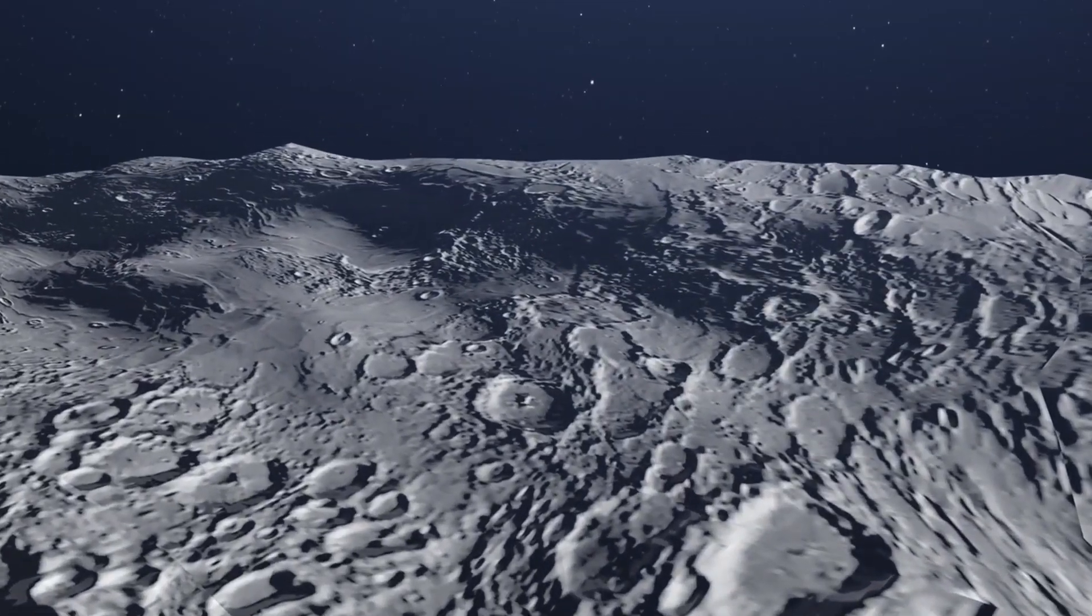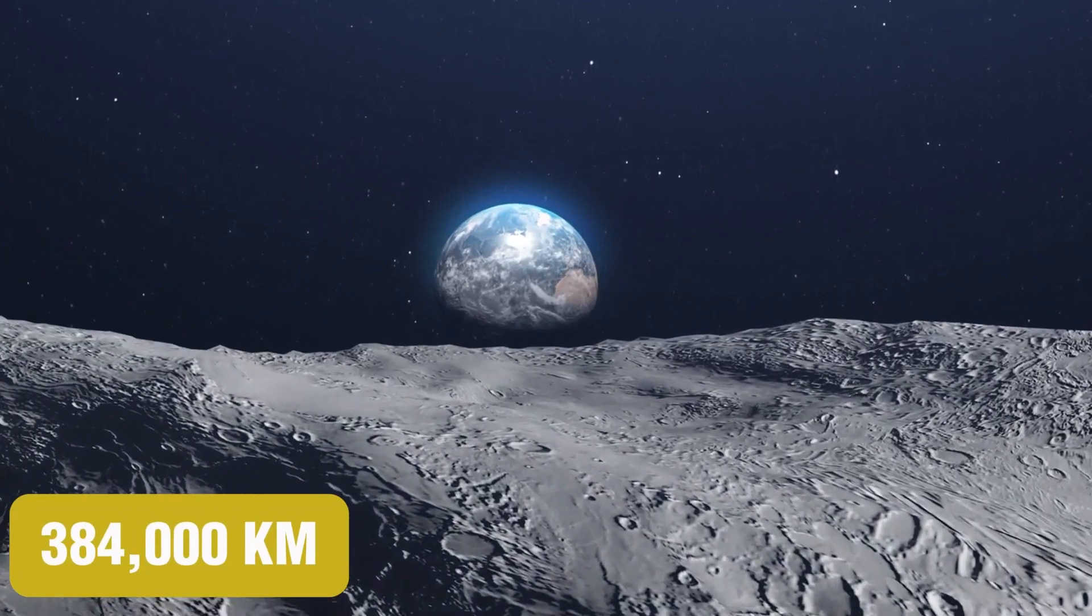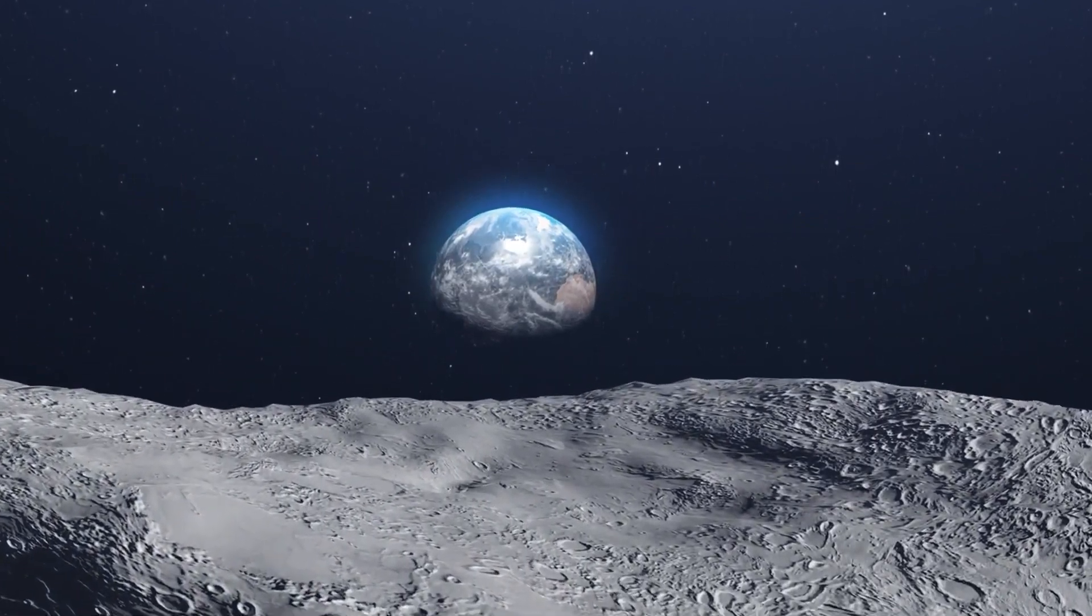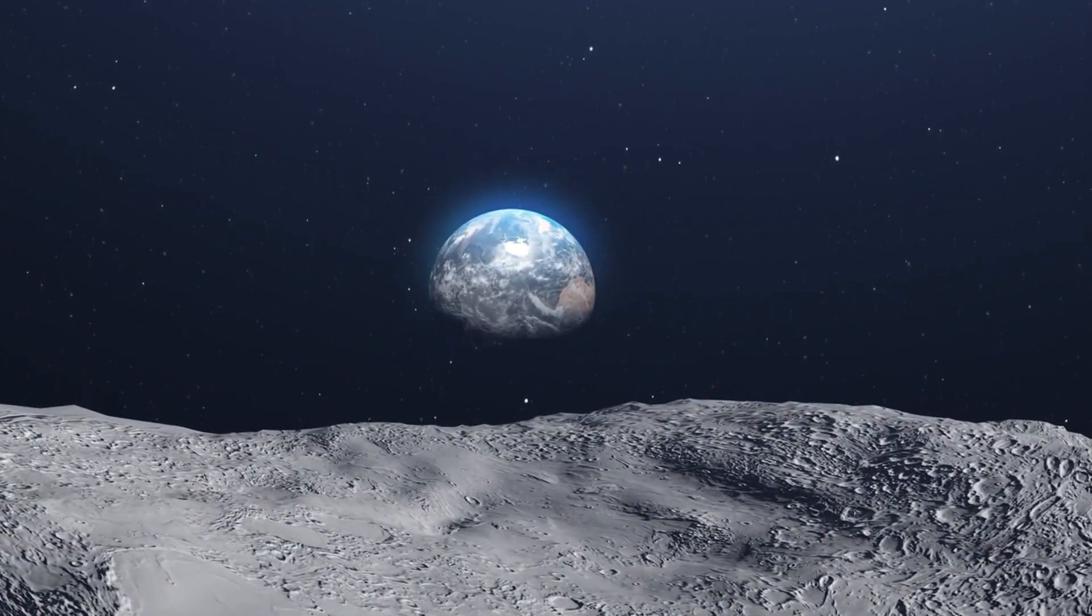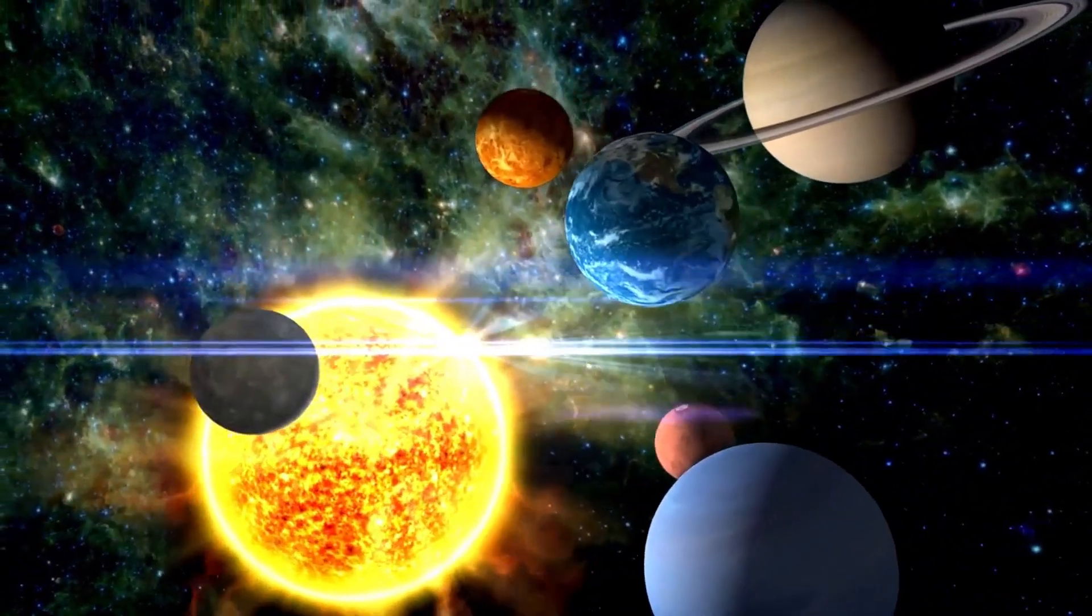When we leave Earth and look at it from the Moon, which is about 384,000 kilometers away, we see it as a delicate ball of blue and green in the darkness of space. It makes us realize how small we are in the grand scheme of things.